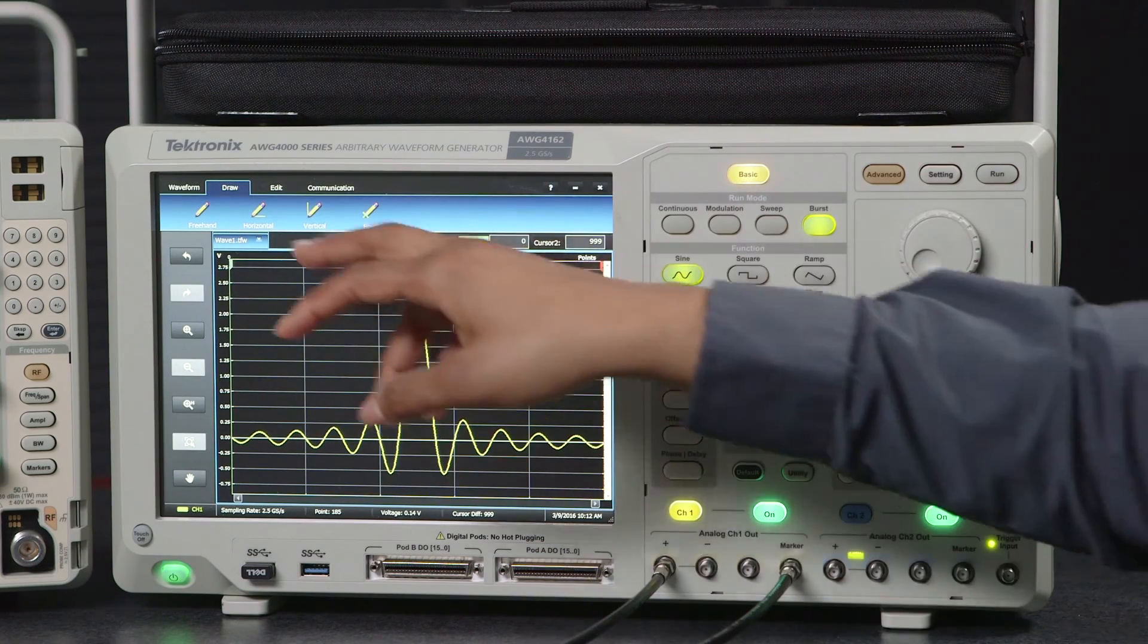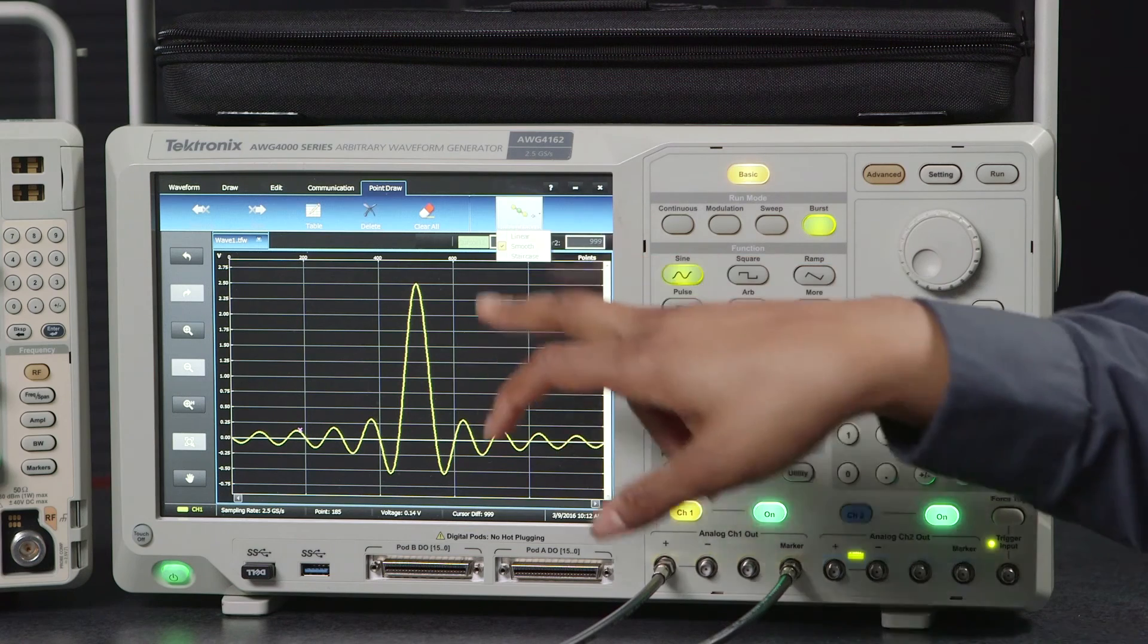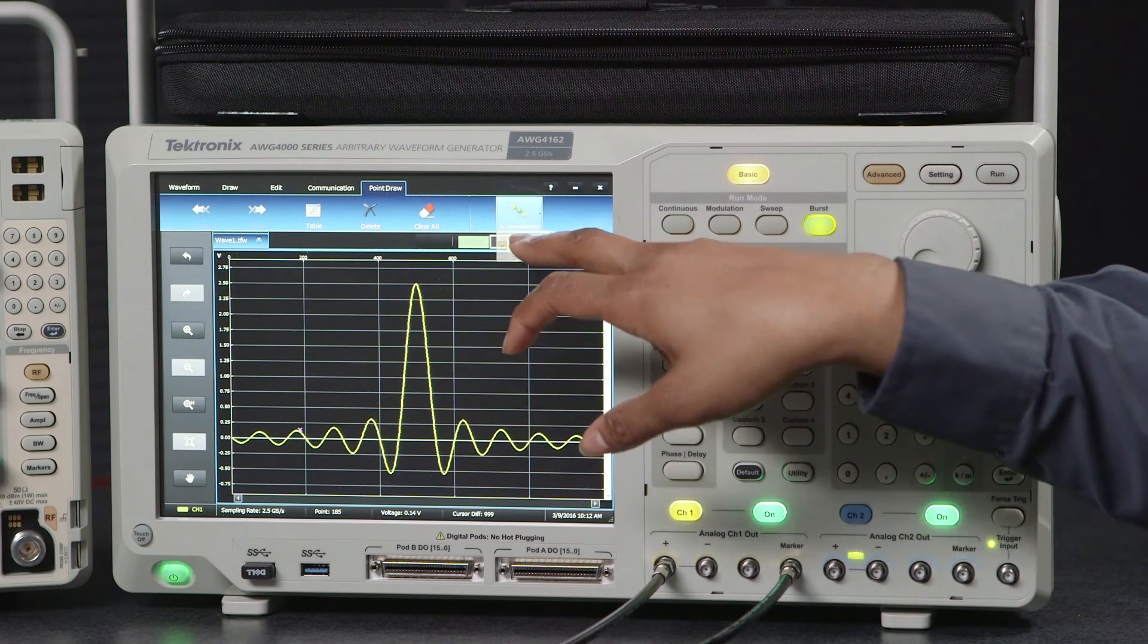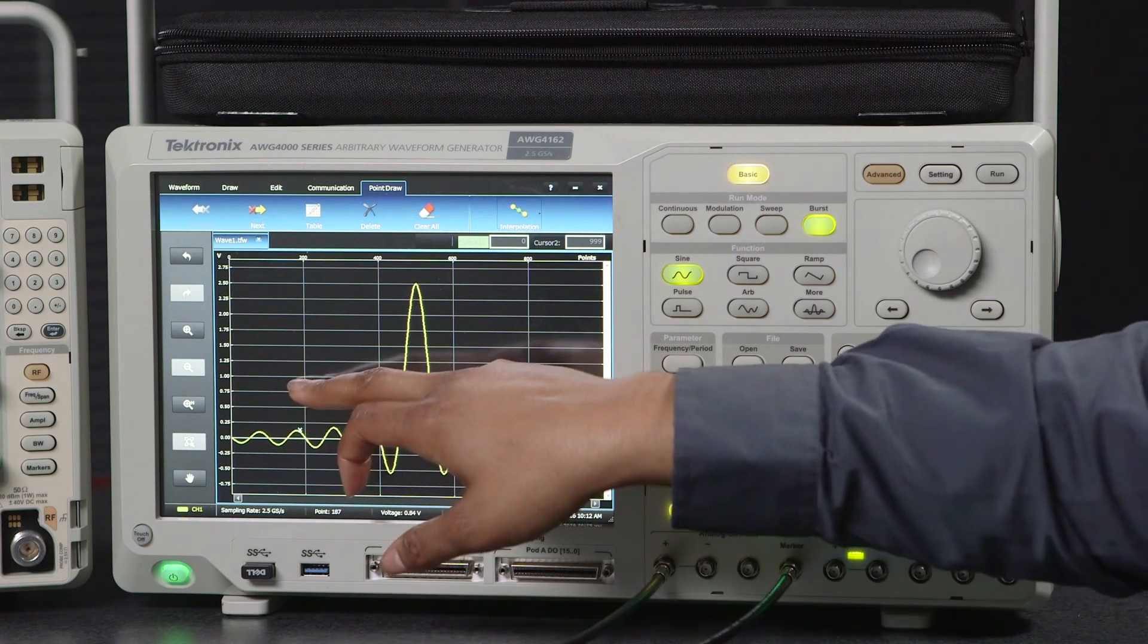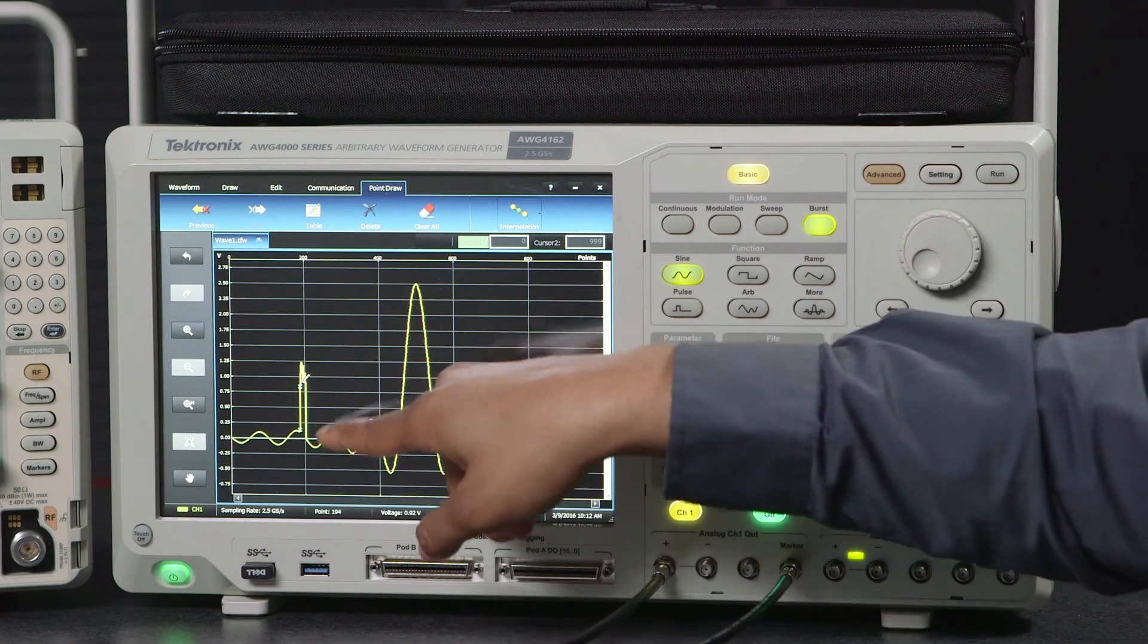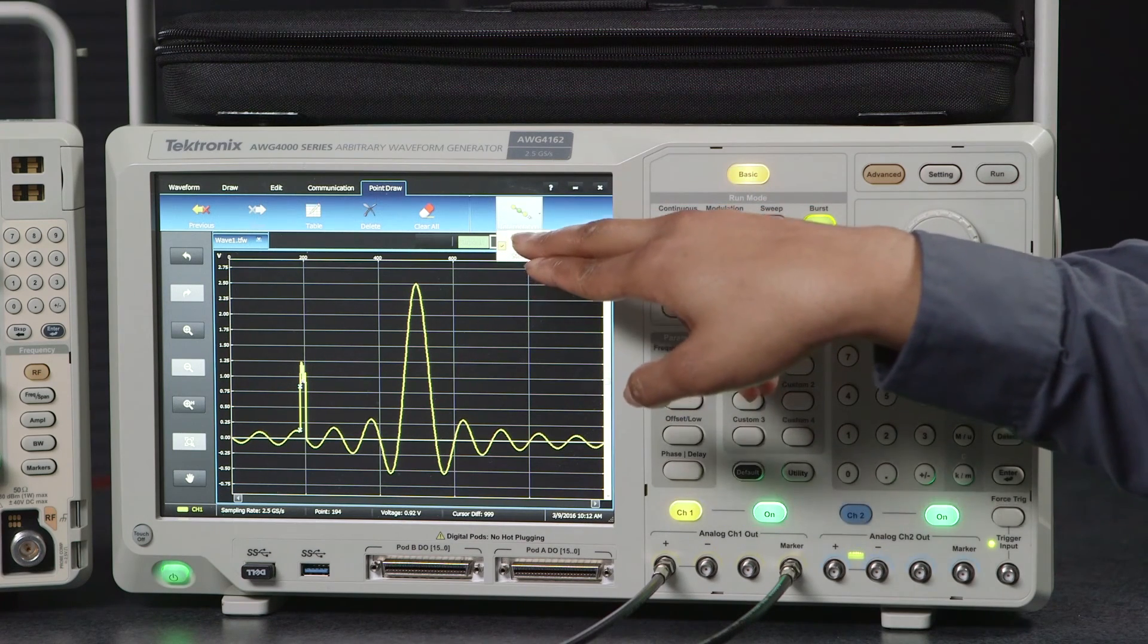From draw we can actually either do freehand or we can point draw and we can use some sort of linear interpolation once we've picked our points. By picking a point here I can get some interpolation here or I can adjust the interpolation so that it's more linear.